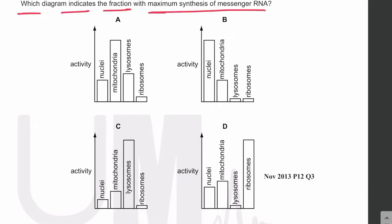Wherever there is DNA, the genes are transcribed to make messenger RNA. Maximum synthesis of messenger RNA occurs in the nuclei, because the nuclei contain linear DNA — a very large DNA with many genes — and these genes are transcribed, producing a lot of mRNA. The second highest would be mitochondria, because mitochondria also contain circular DNA whose genes are transcribed to make mRNA.